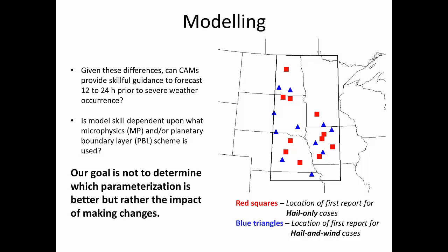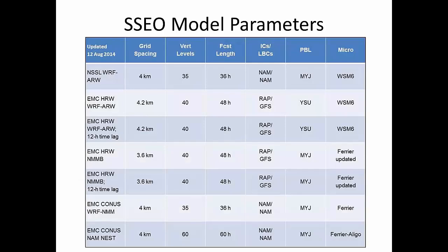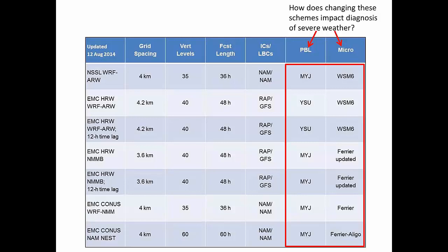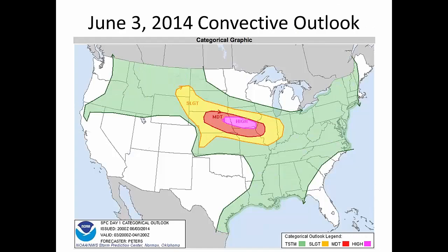We took a subset of our larger databases and did the modeling work on those cases, shown in red squares and blue triangles on the right. To show an example of what we're talking about, a lot of operational forecasters these days use the SSEO to forecast convection. This is just an overview of the models included in the SSEO — we can see on the right that it has variable PBL and microphysics schemes. So do varying these schemes have an impact on what the SSEO shows? This was a June 3rd event across portions of the Central Plains that produced quite a bit of severe convection in Nebraska, Iowa, and Missouri.